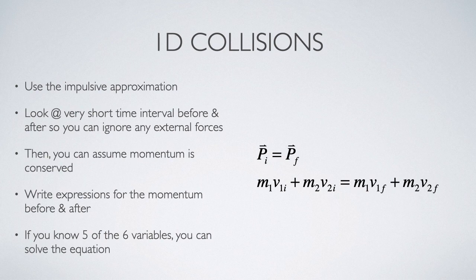So if you look at this equation, there are two masses, two initial velocities, two final velocities, six total variables. If we have information about five of those, and it doesn't matter which five, then we can solve for the remaining variable.